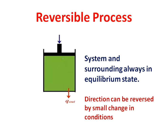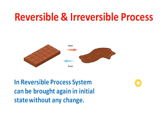In reversible process, the system and surrounding are always in equilibrium state, and the direction can be reversed by a small change in condition. Suppose the temperature is T, pressure is P, and entropy is S. By a very small change in any parameter of the system, we can reverse its direction, because the system is always in equilibrium state — there is no significant difference between the system and surrounding parameters. We will clear this concept in more detail by taking one more example.